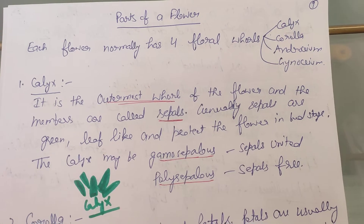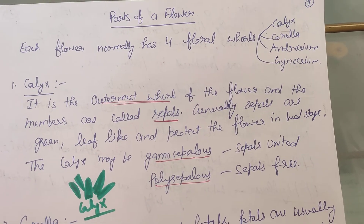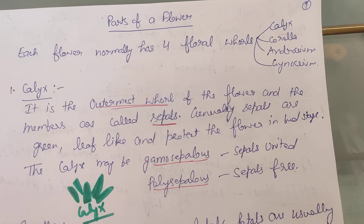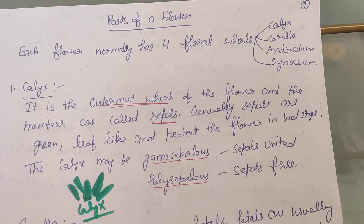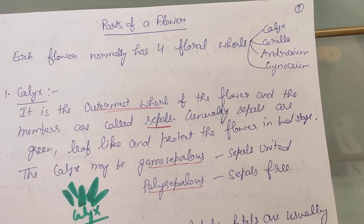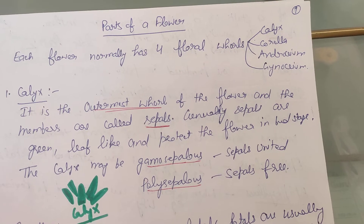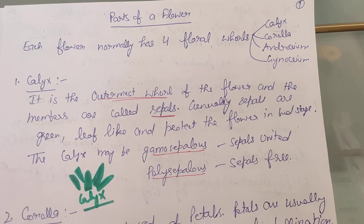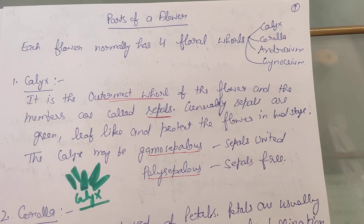Hello guys, today we are going to learn about the parts of a flower. Each flower normally has four floral whorls whose names are calyx, corolla, androsium, and gynosium.